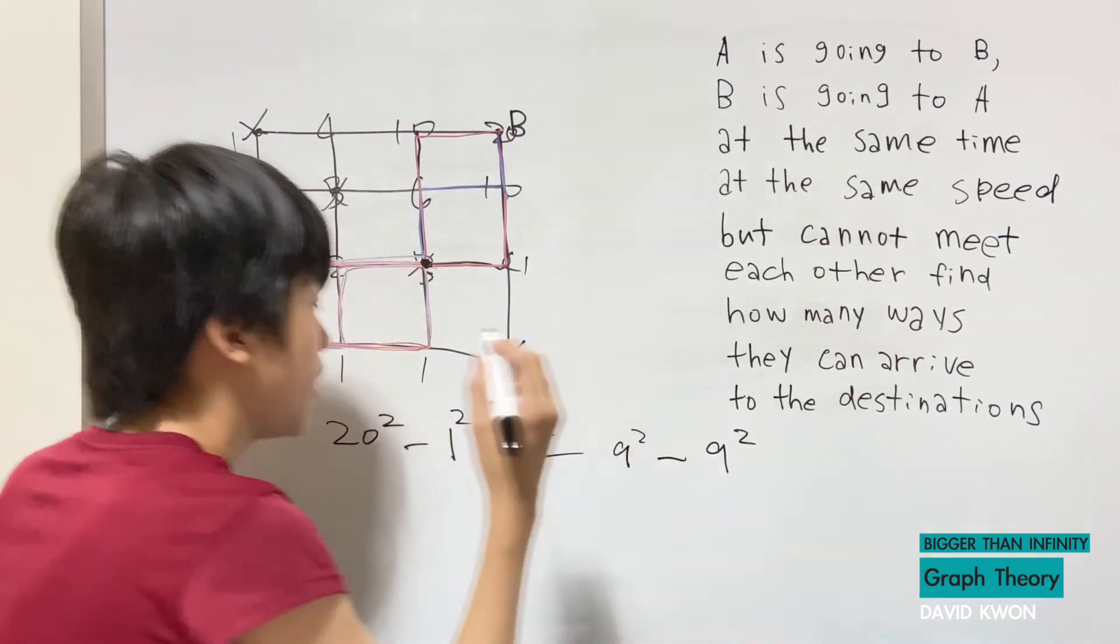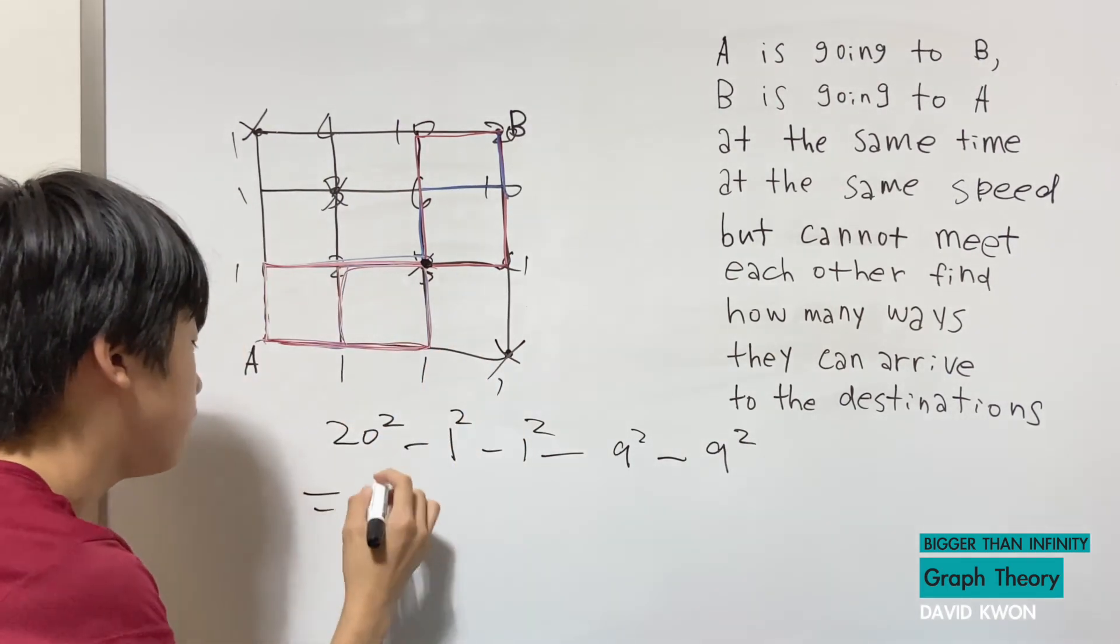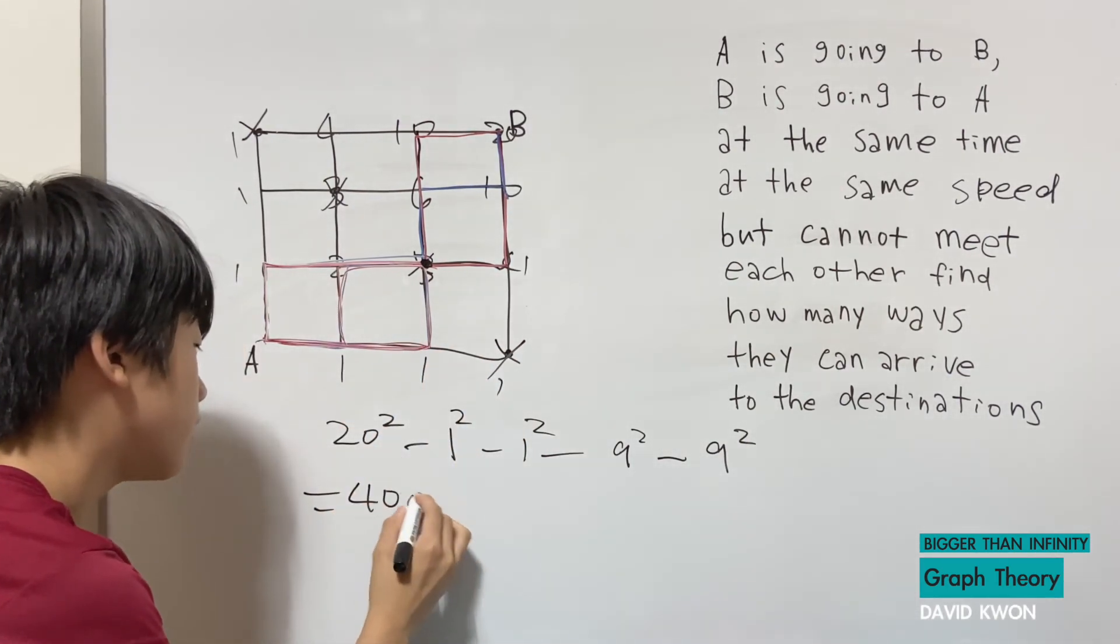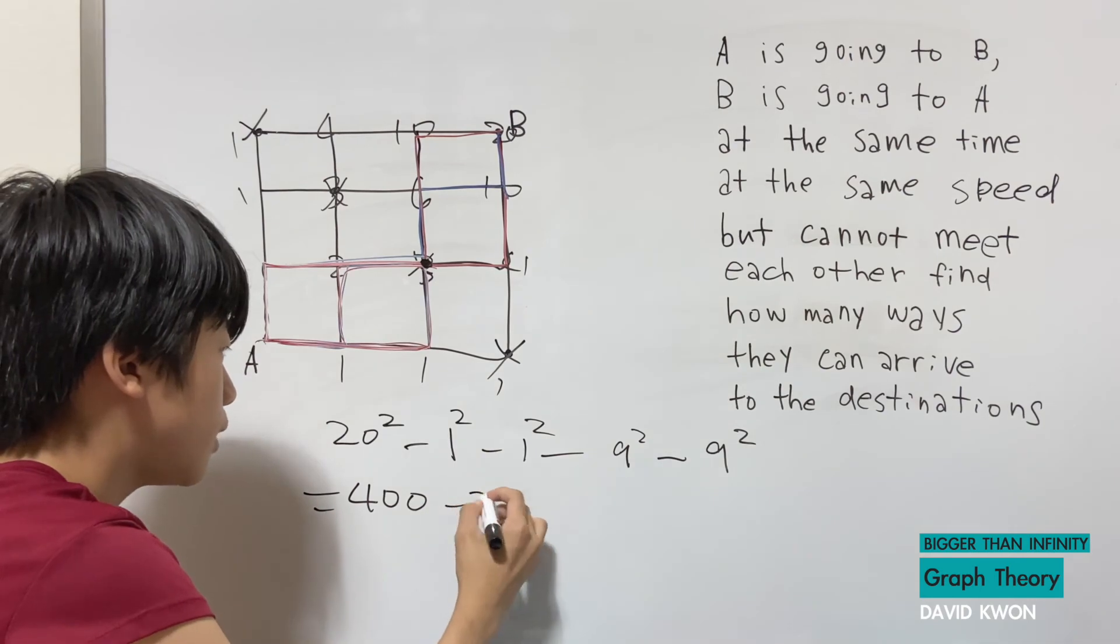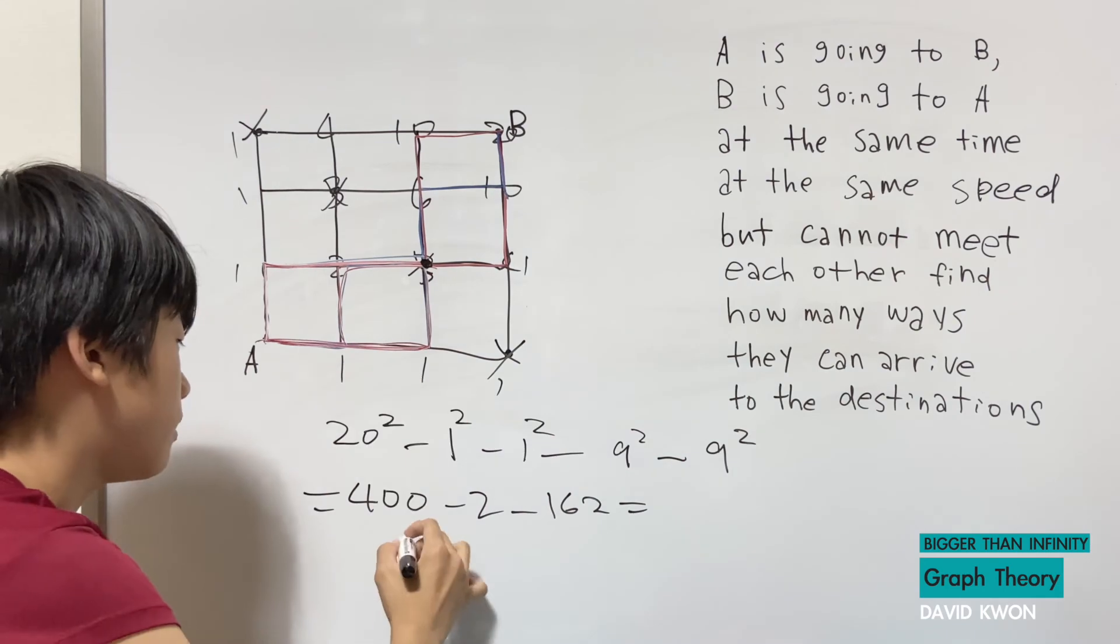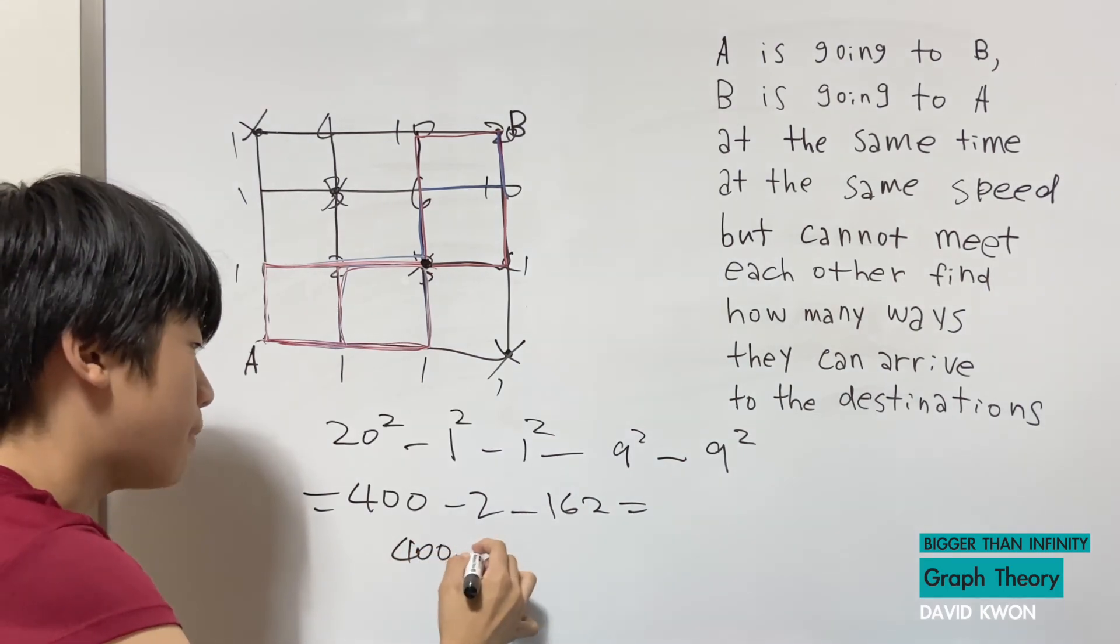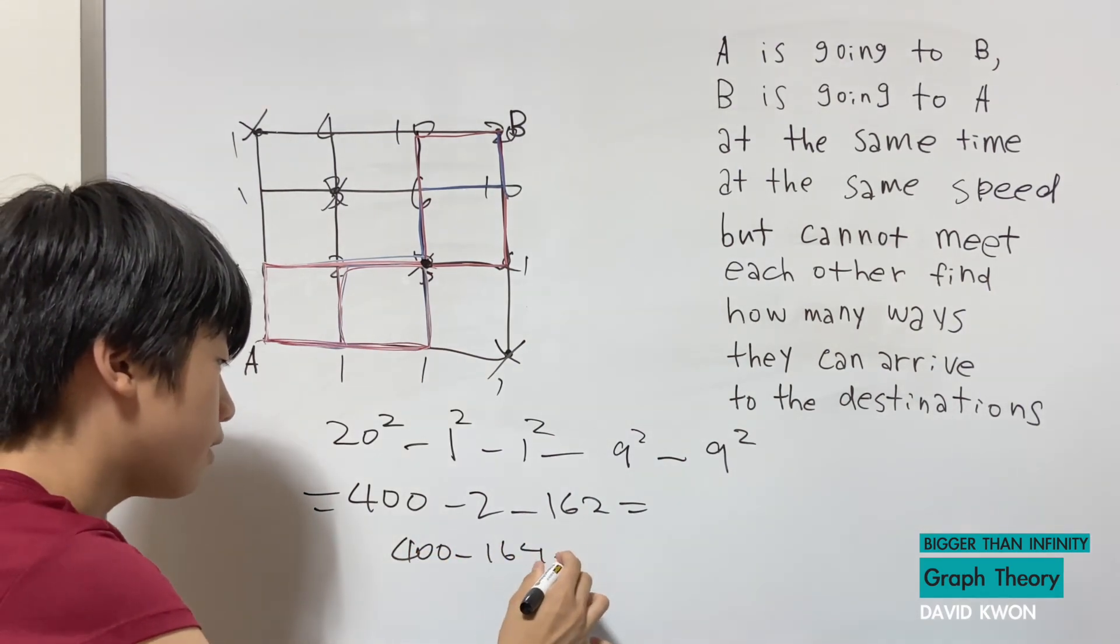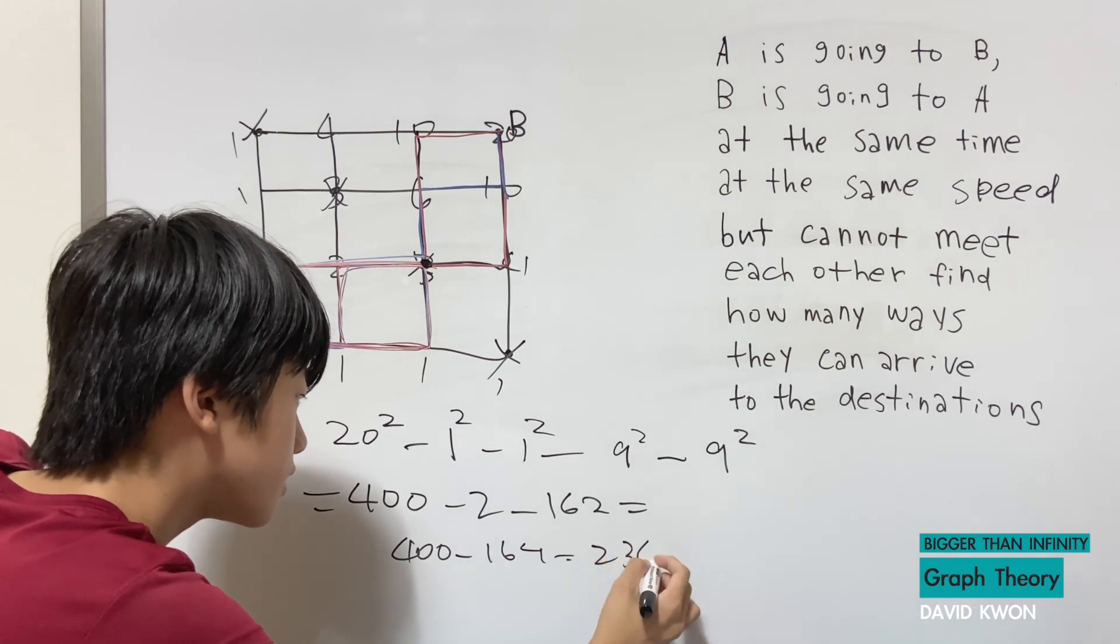so nine squared but there are another point that is exactly the same way because it's symmetrical so another nine squared minus nine squared which all of this is just 400 minus two minus two minus 162 and that is going to be 400 minus 164 that is 236 ways